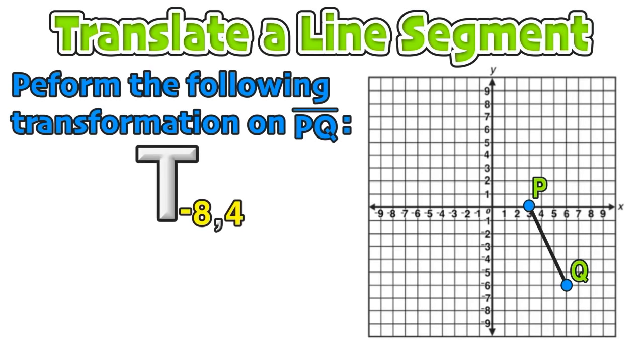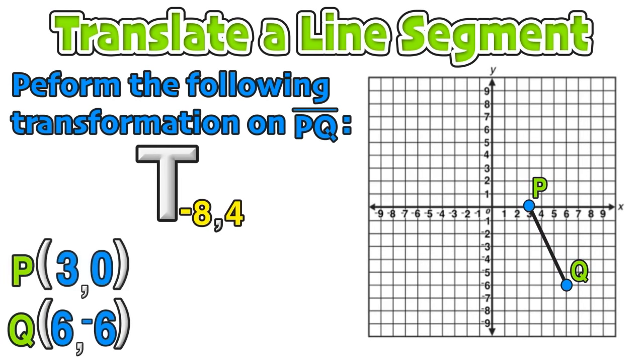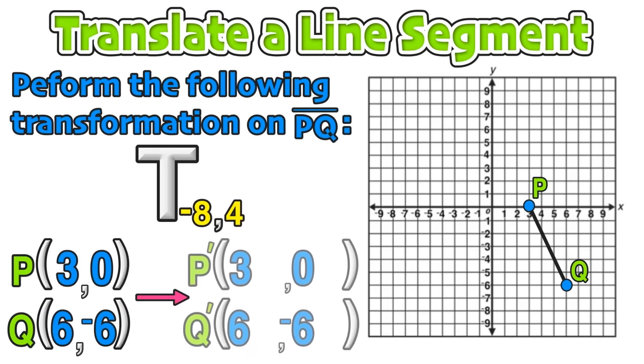Let's start our first example by performing the following transformation on line segment PQ. We can start by writing down the coordinates of the endpoints of PQ with P at (3, 0) and Q at (6, -6). Now since this line segment is being translated, we know that P prime and Q prime will have different coordinates than P and Q.